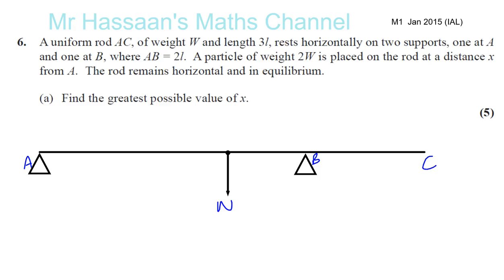So basically, if it's 3L, then 1.5L along will be the weight. So let's put something in to show the weight acting down exactly halfway between A and C. That's the weight W. So that's like Mg, so we don't have to write Mg. The weight is the actual weight. We also have two other forces acting. We've got the reaction force at A and the reaction force at B.